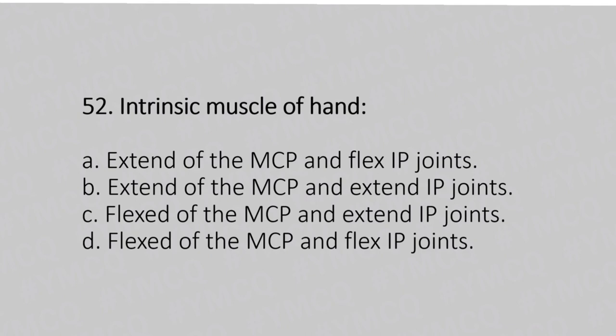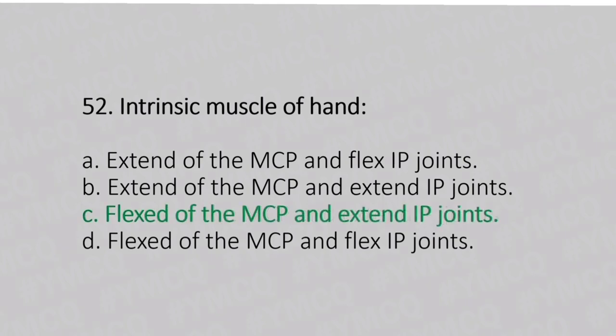Now let's move to question number 52. Intrinsic muscles of the hand. Option A: extension of the MCP and flexion of IP joints. Option B: extension of the MCP and extension of IP joint. Option C: flexion of the MCP and extension of IP joint. Option D: flexion of the MCP and flexion of IP joint. And the answer is Option C, flexion of the MCP and extension of IP joint.